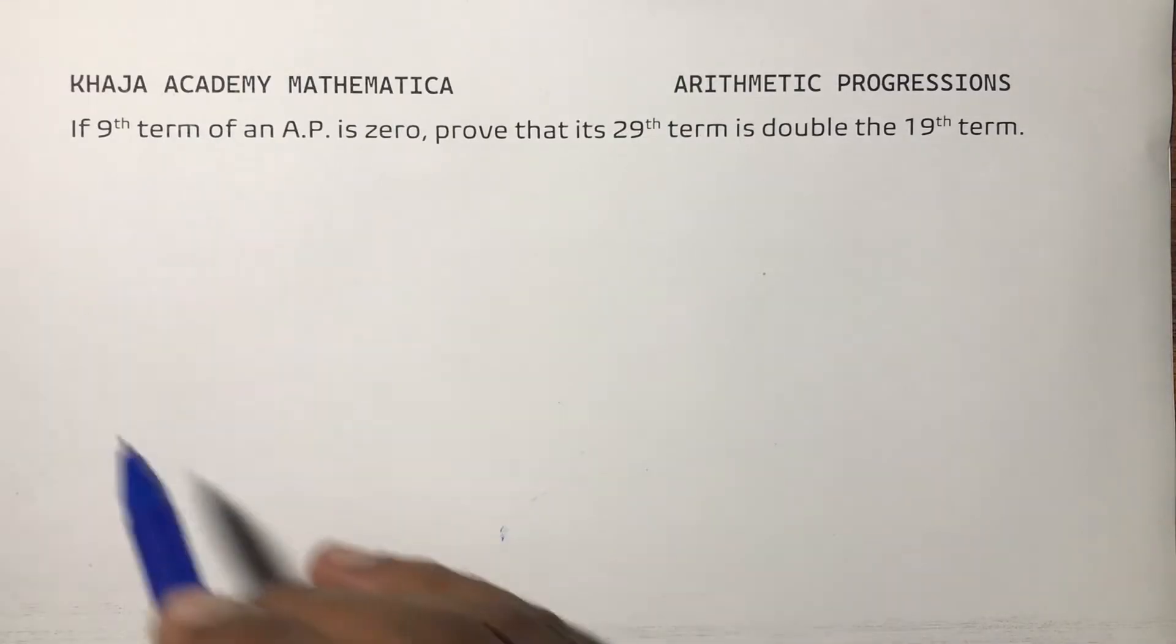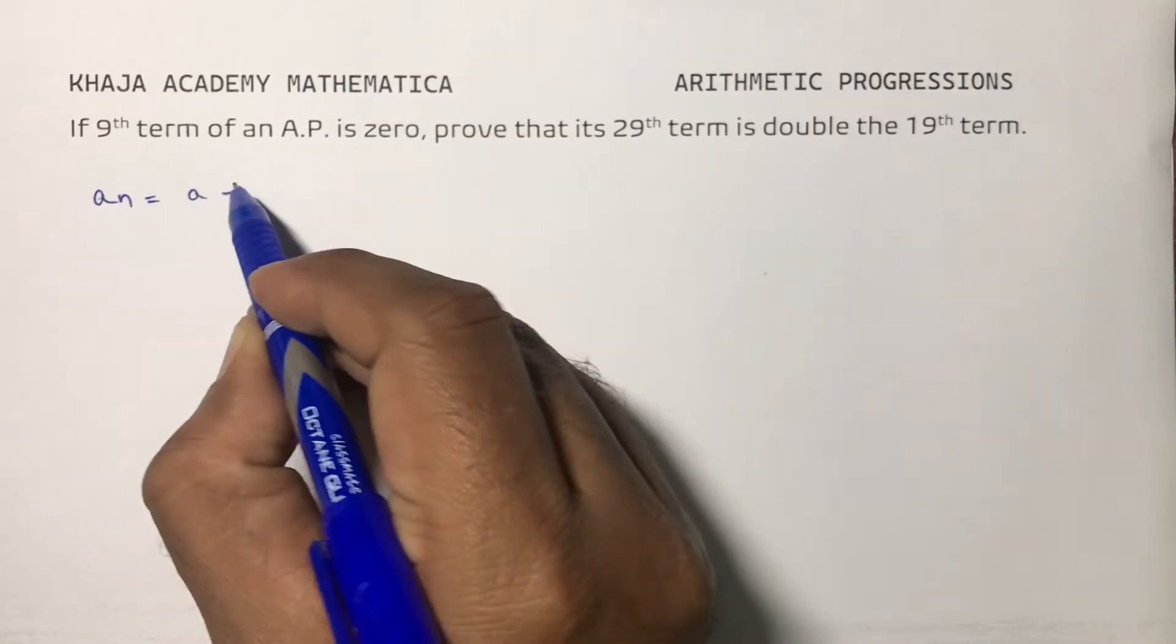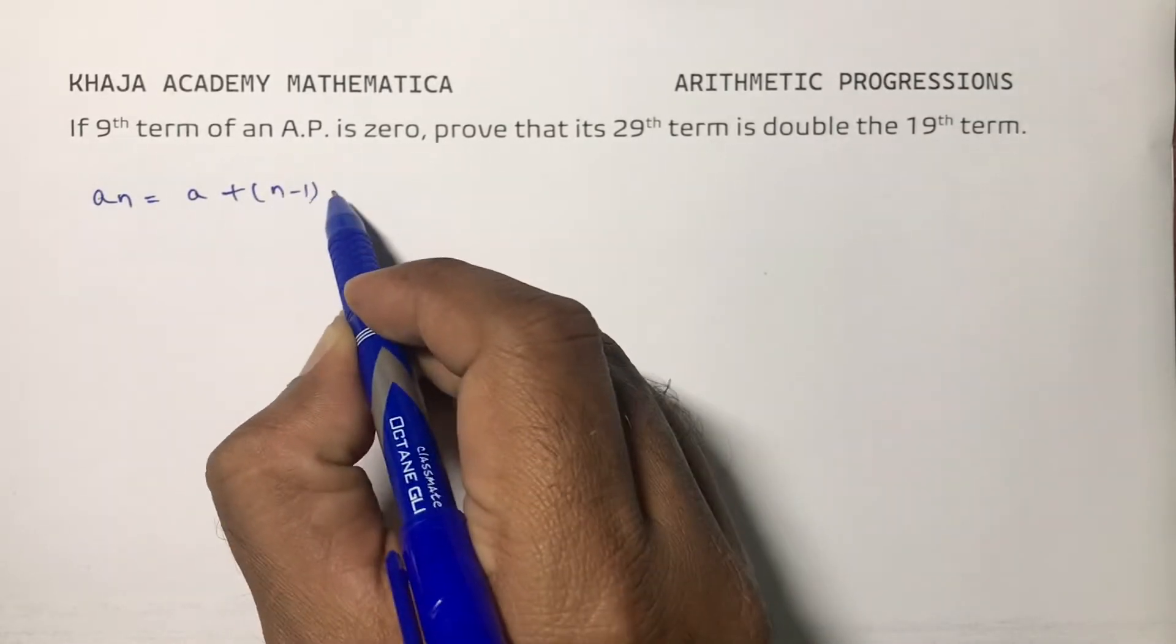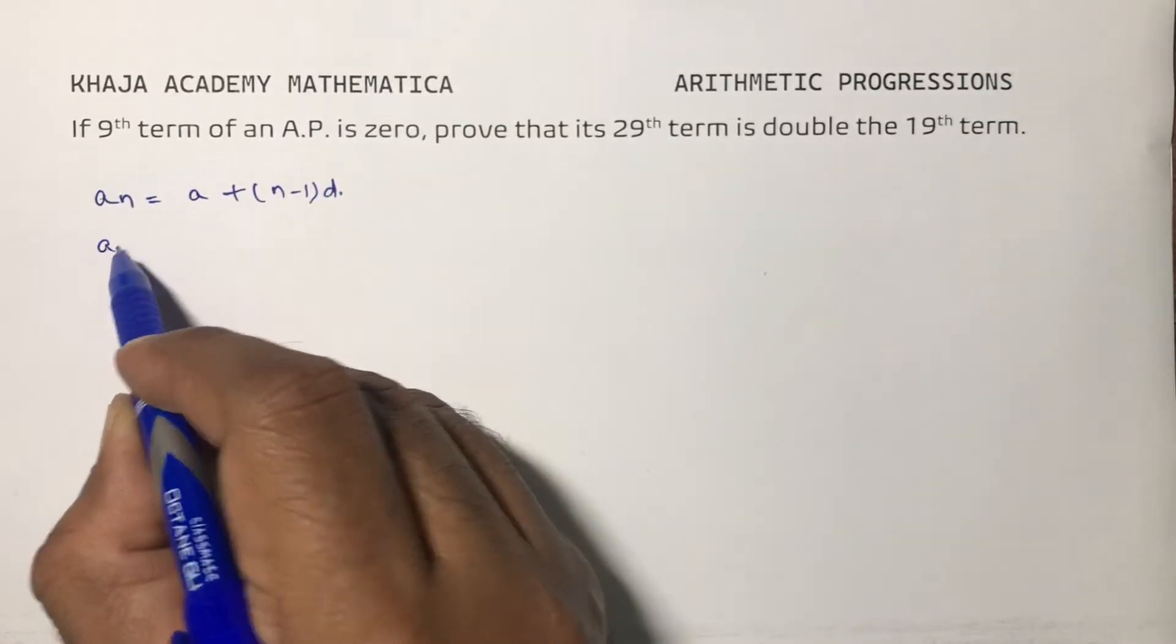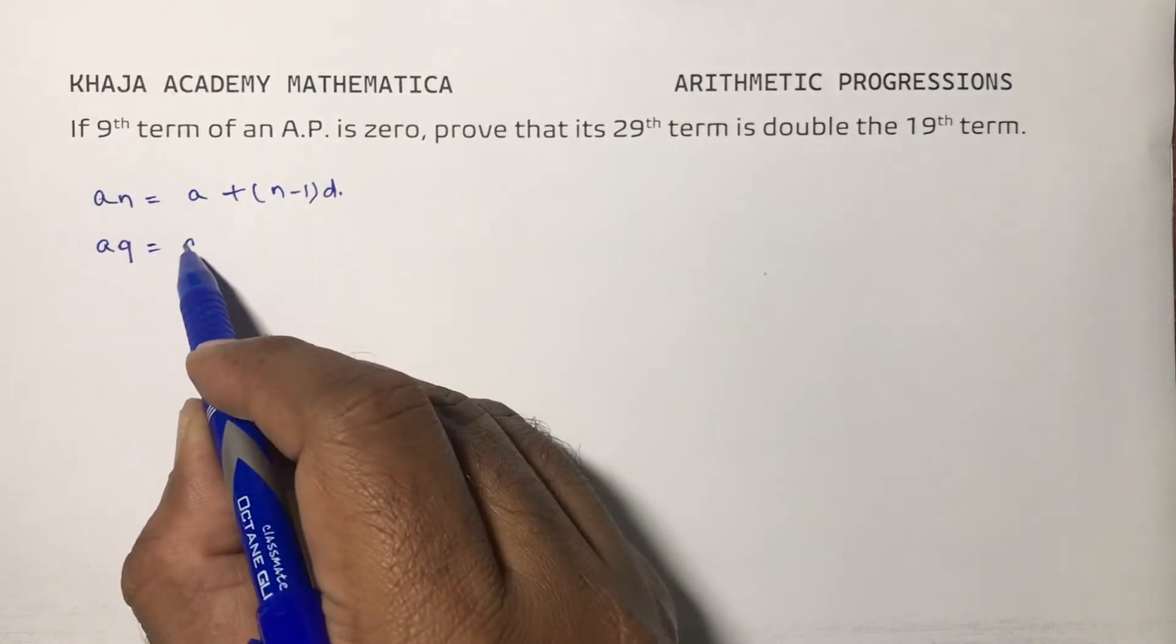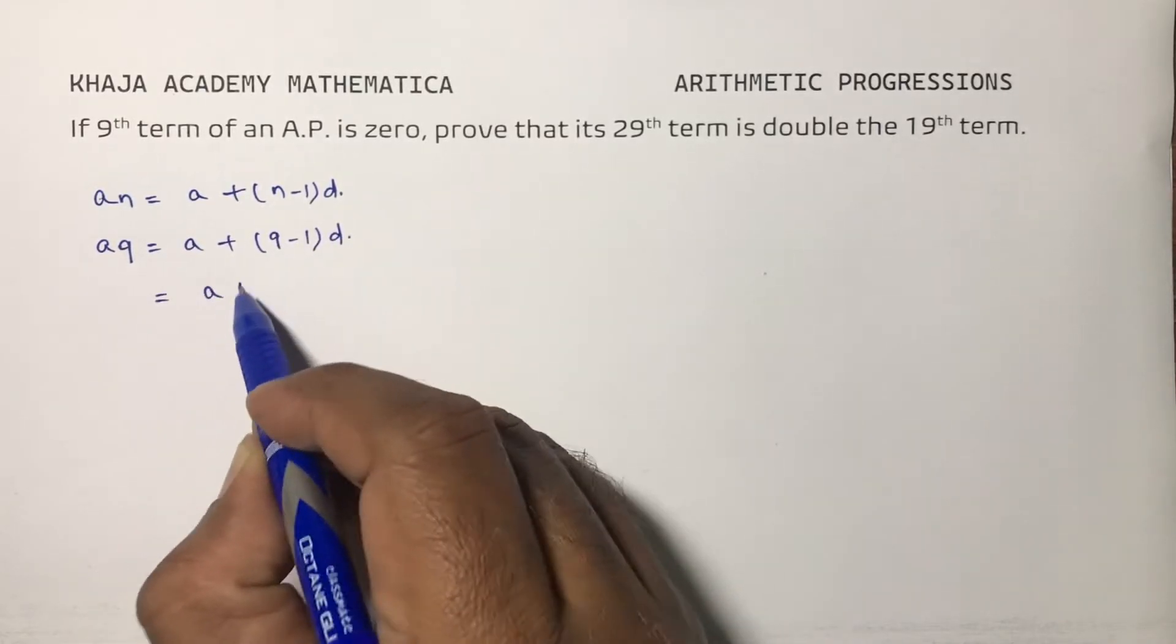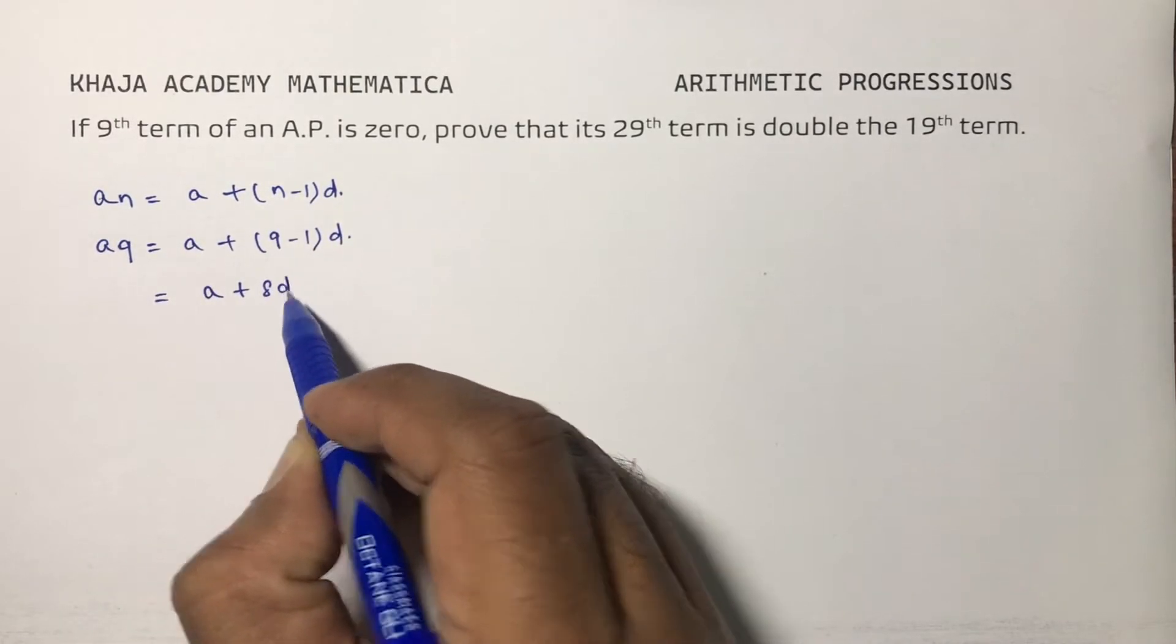The nth term of an AP formula is A + (N-1)D. So A9 will be A + (9-1)D, which is A + 8D.